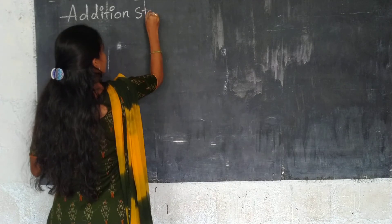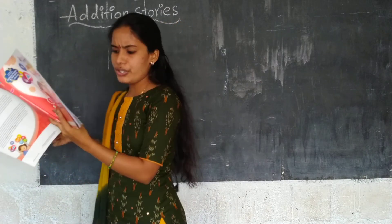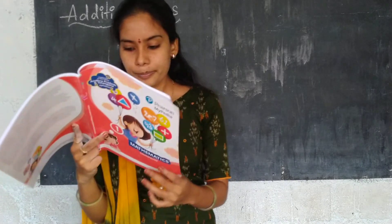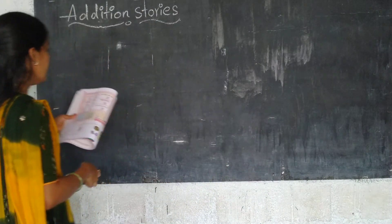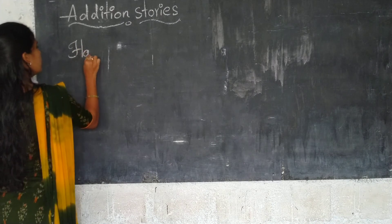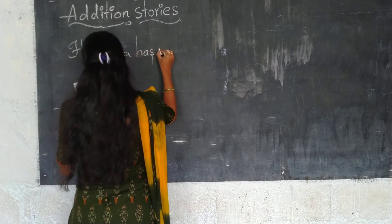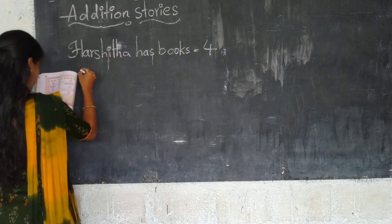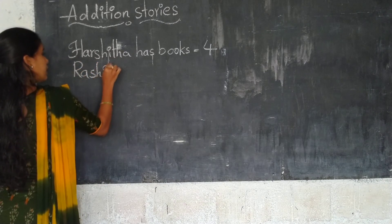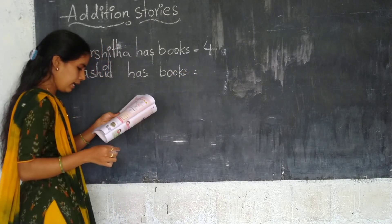Addition stories — what are addition stories? These are addition word problems. Hashita has four books and Rashit has two books. How many books do they have altogether? Hashita has four books, Rashit has two books.